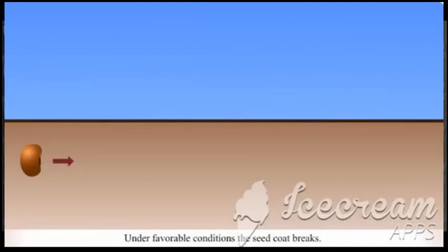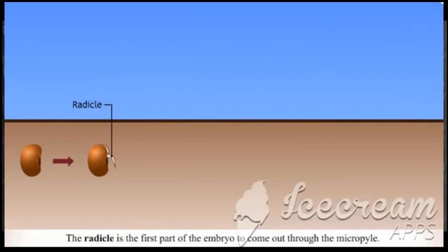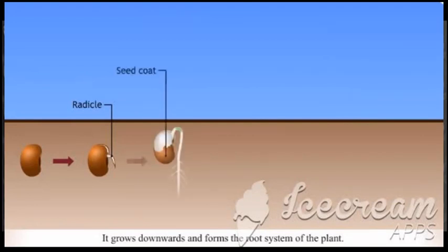Under favorable conditions, the seed coat breaks. The radicle is the first part of the embryo to come out through the micropyle. It grows downwards and forms the root system.